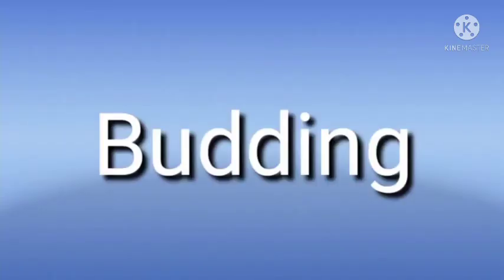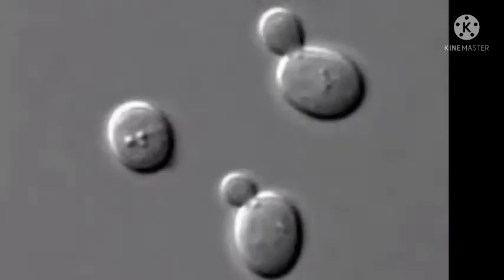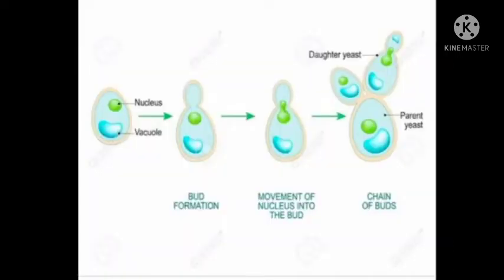Third part of asexual reproduction in unicellular organisms is budding. Let us see how it takes place. Look at the images given on the screen. You can see the yeast cell forming budding. Yes, that is small bud coming out of many parent cells. There are parent cells and a small notch is coming out of the body.